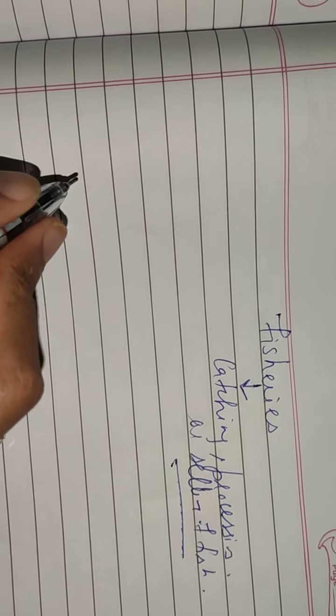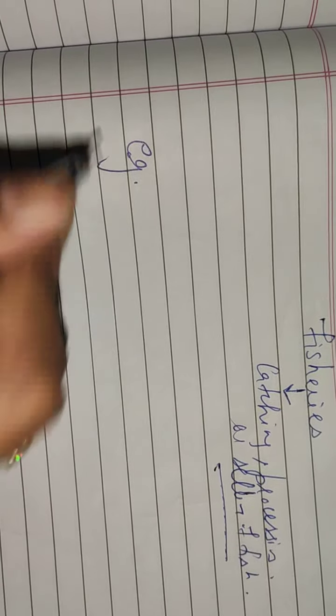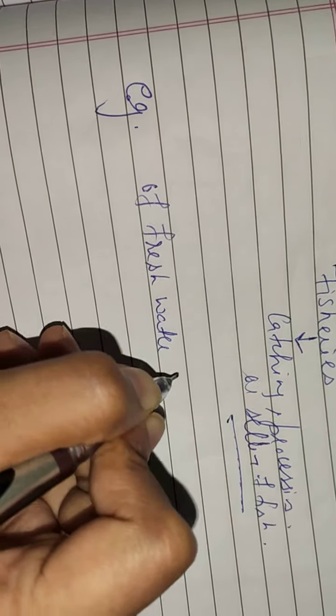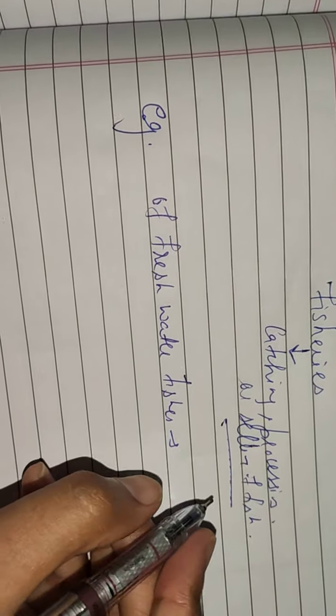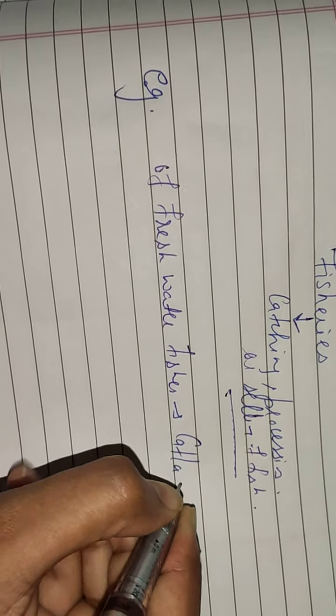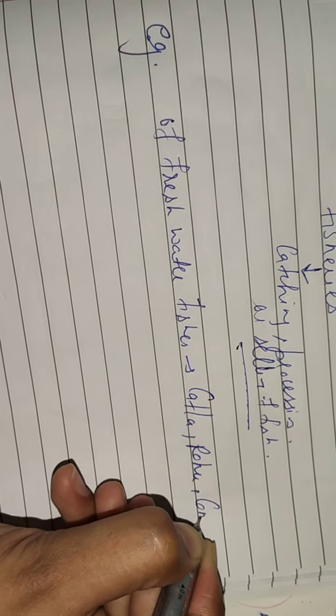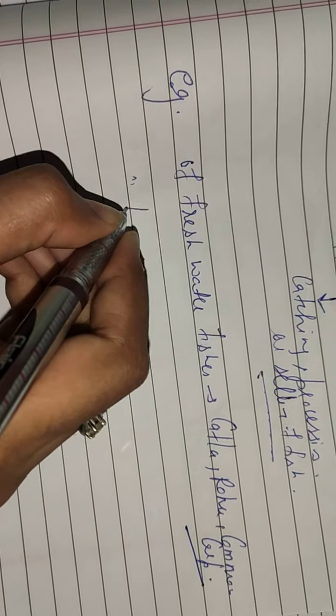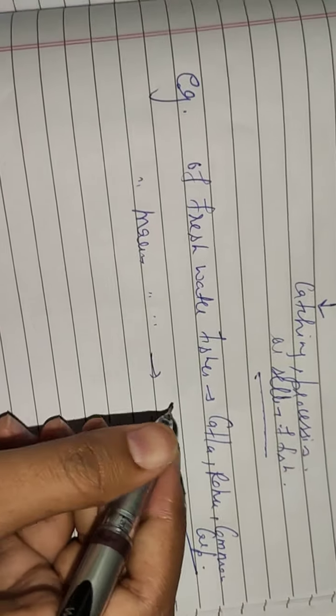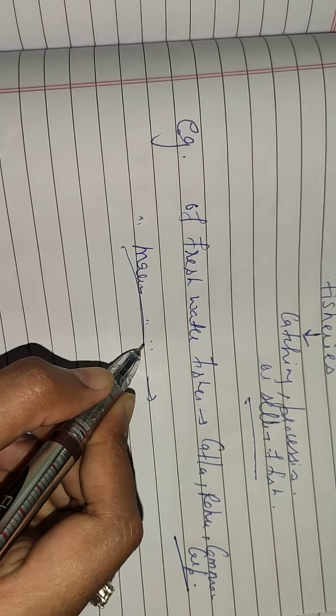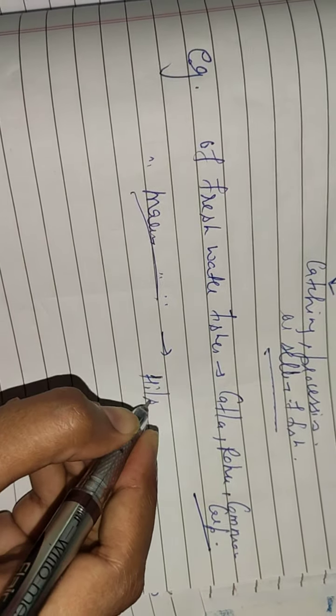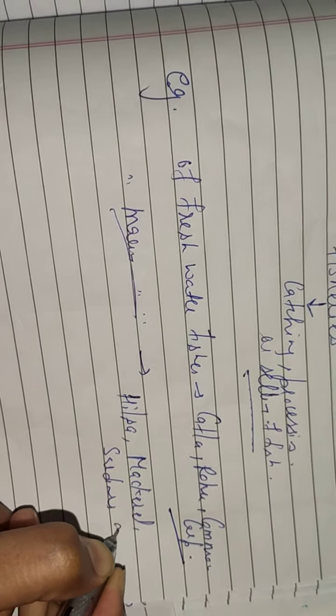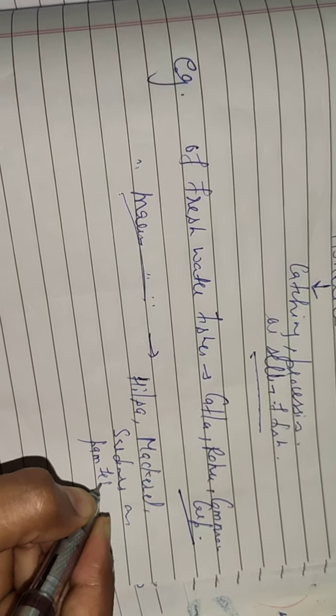Examples of freshwater fishes: one is catla, second is rohu, and third is common carp. Marine water fishes include hilsa, mackerel, sardines, and pomfret.